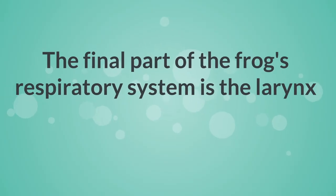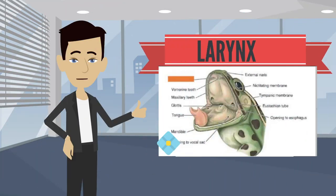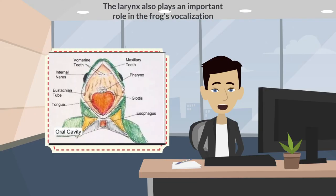The final part of the frog's respiratory system is the larynx. This is a small organ that is located near the frog's throat. It is responsible for controlling the flow of air in and out of the lungs. The larynx also plays an important role in the frog's vocalization.